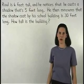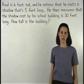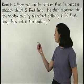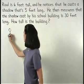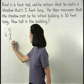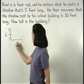In this problem, I would first draw a picture of Raul and his shadow. We know that Raul is six feet tall and he casts a shadow that is five feet long.